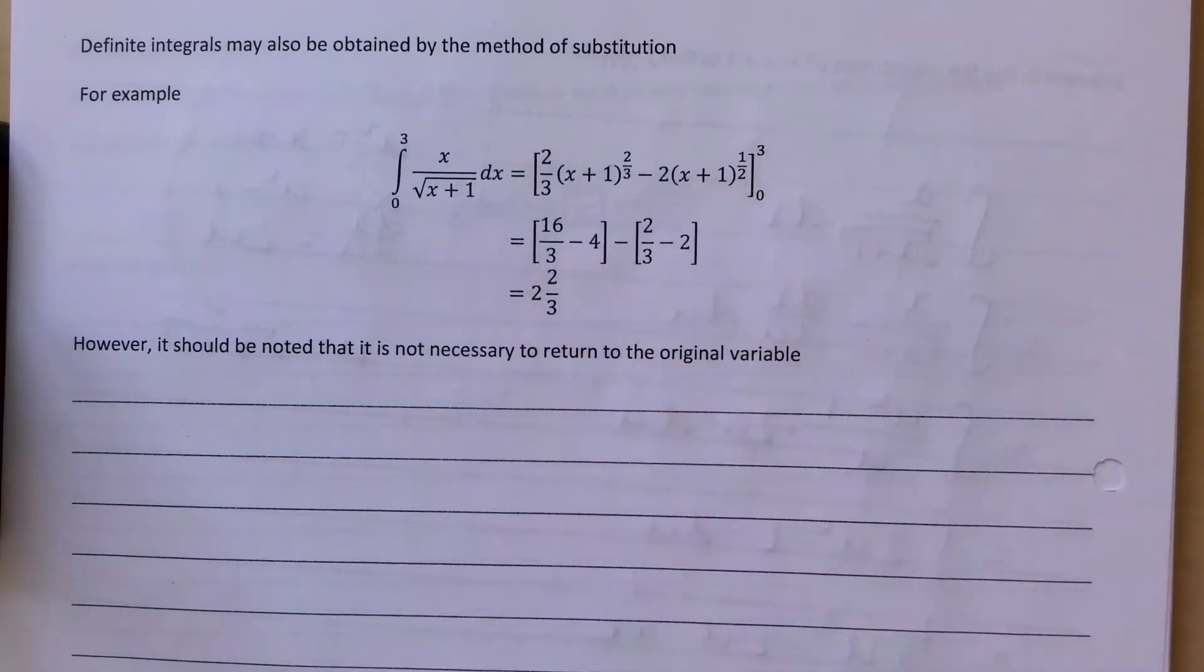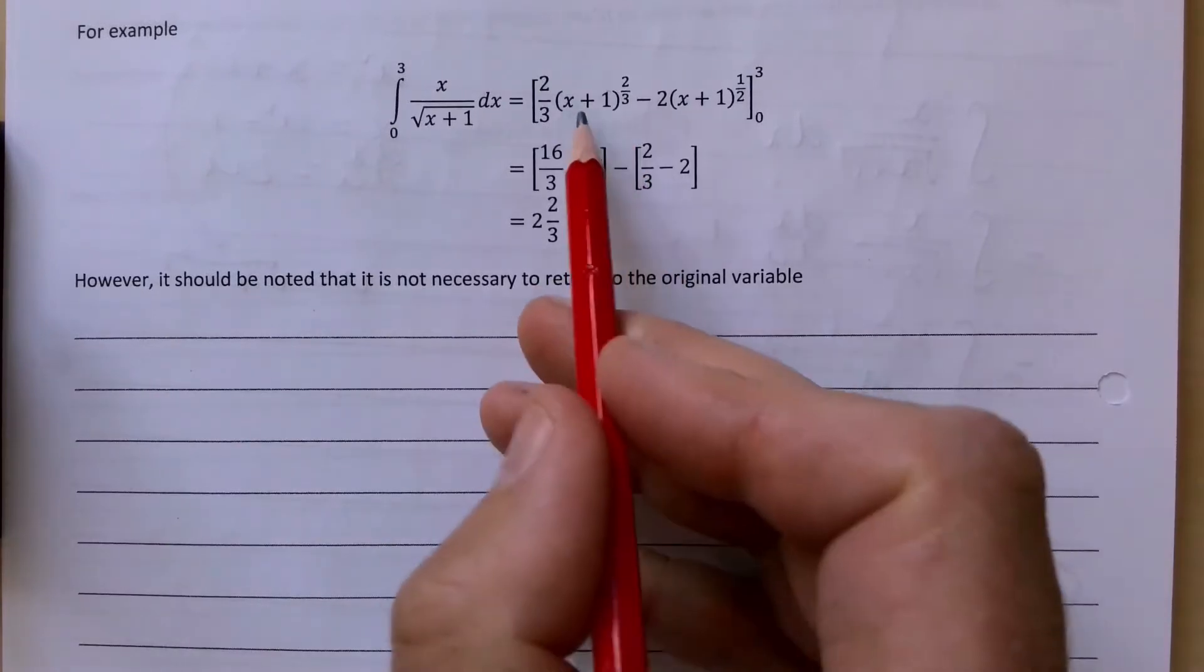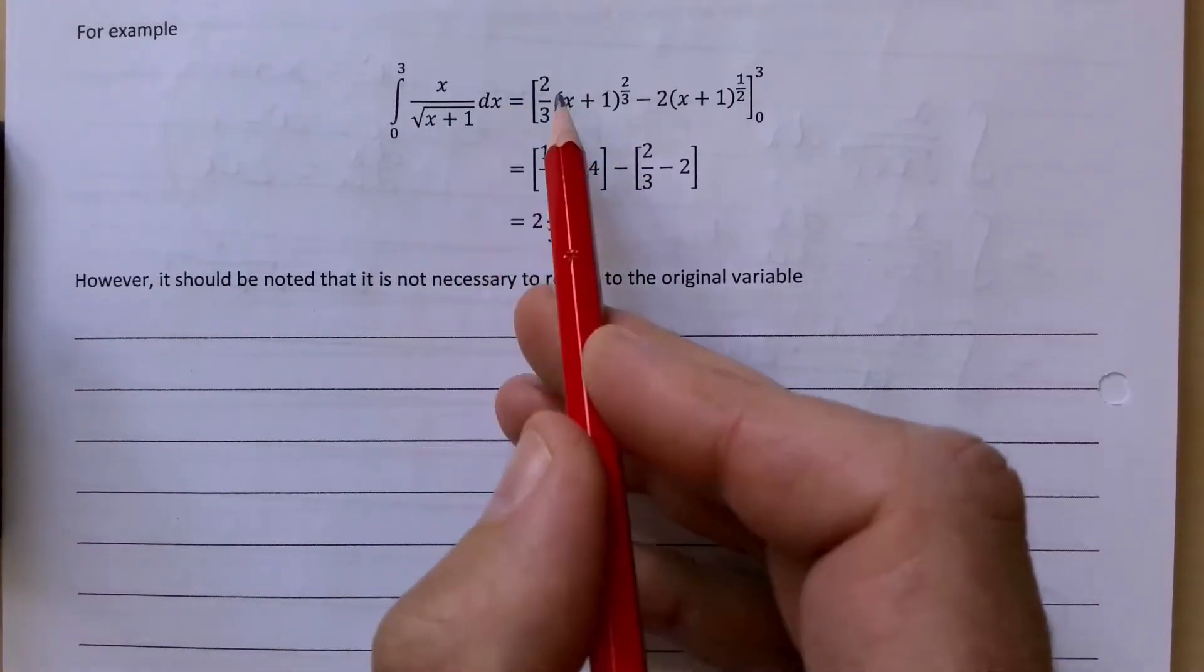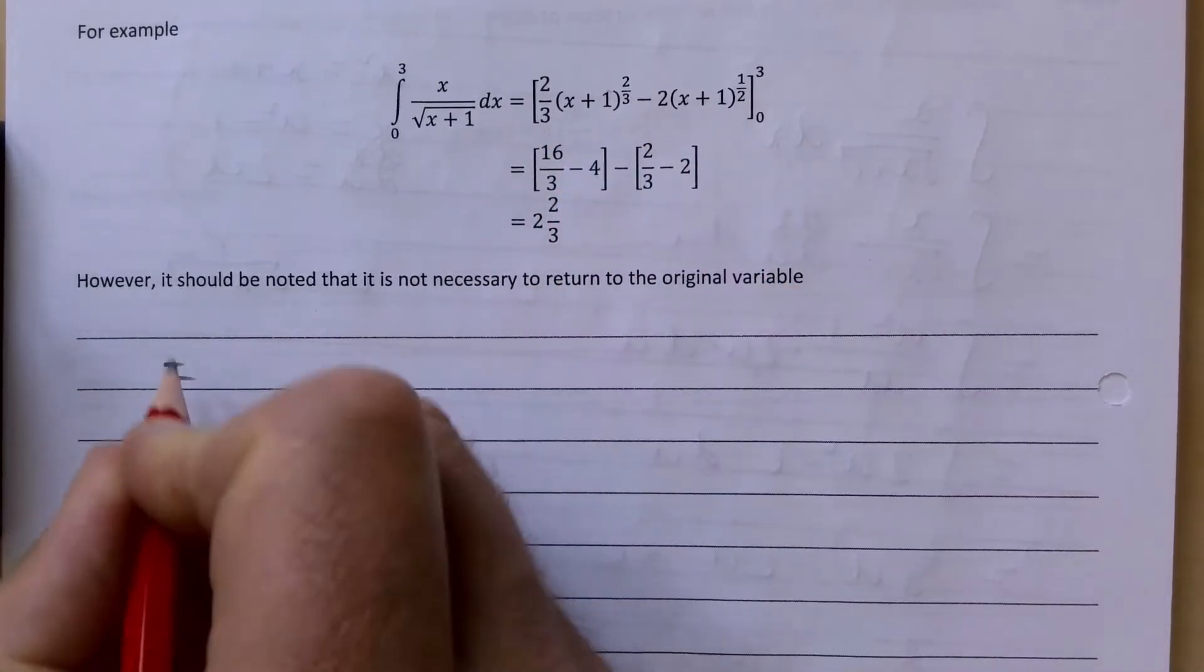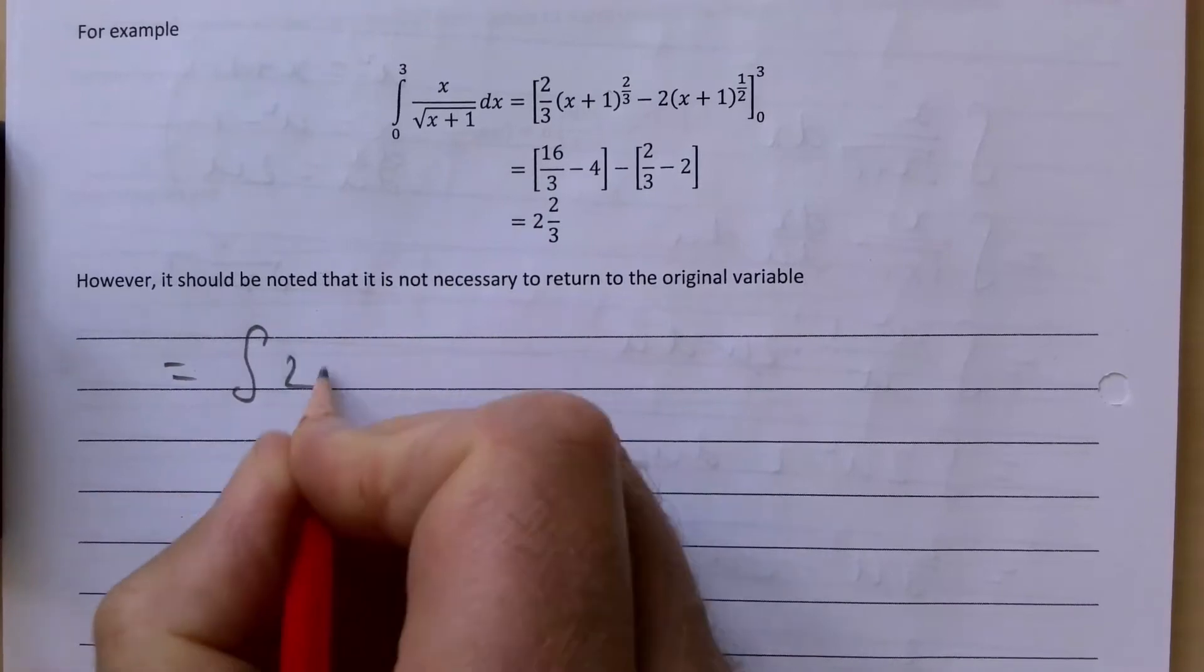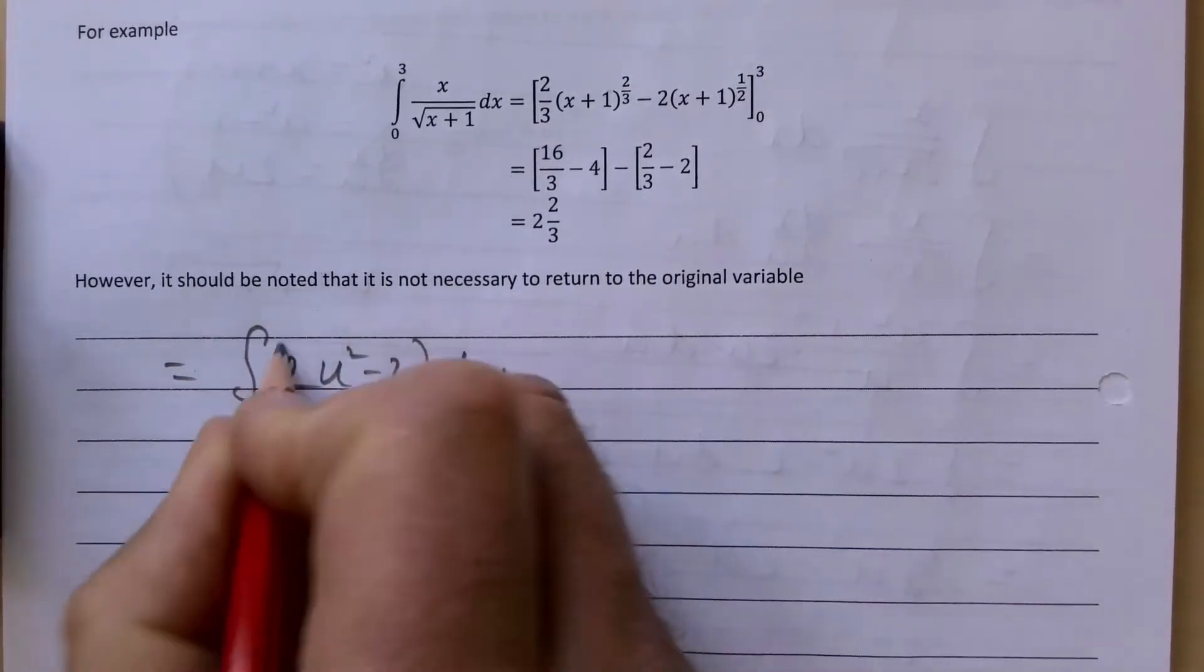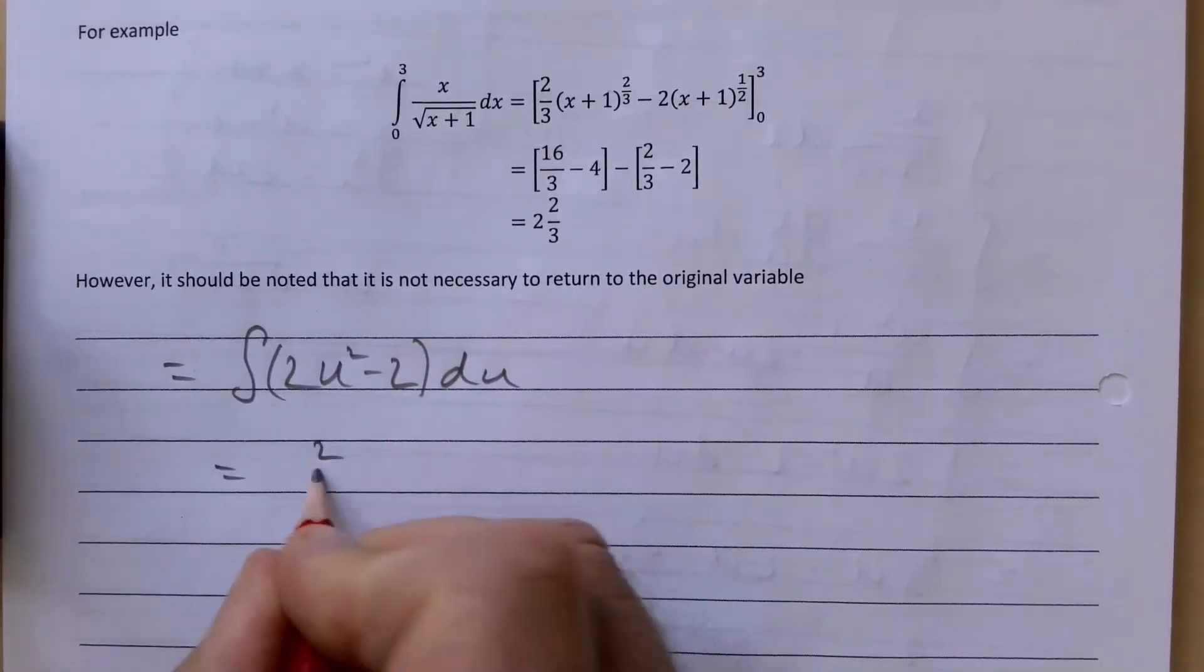There is another way, however. If you remember back what we did was we integrated with respect to u and then substitute the x back in. But instead of doing that, if you take it from this line here, the integral of 2u squared minus 2 du, you hopefully remember that from the previous video. When you integrate that, we got 2 thirds u cubed take away 2u.